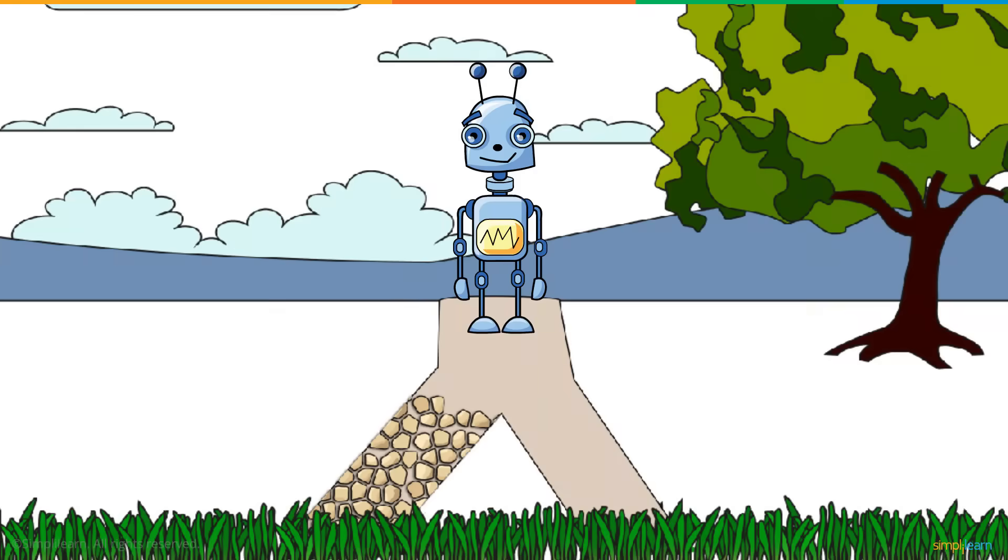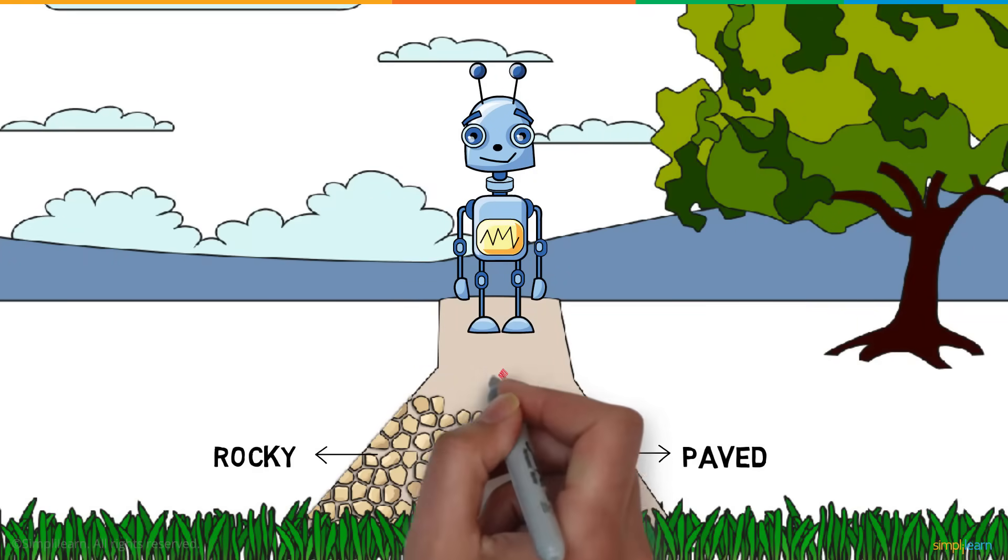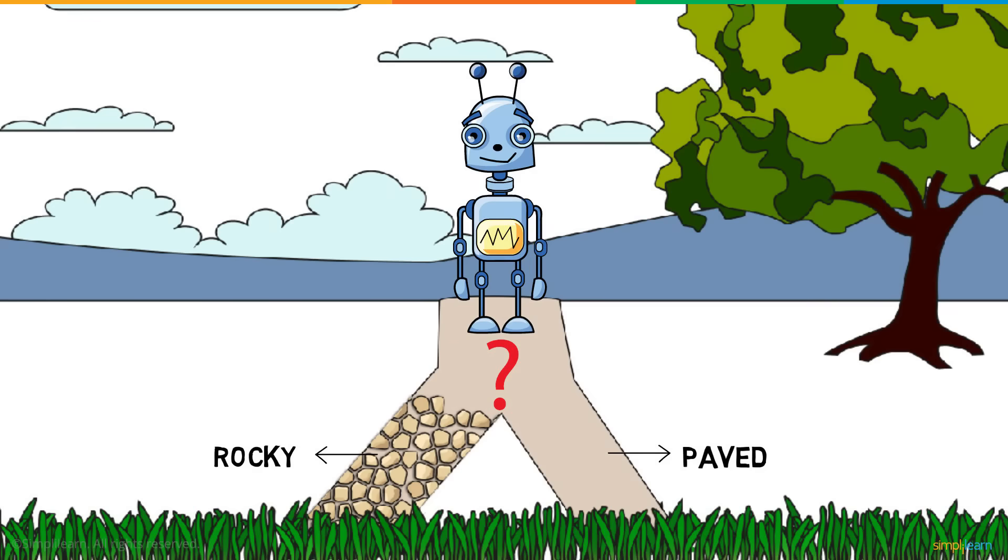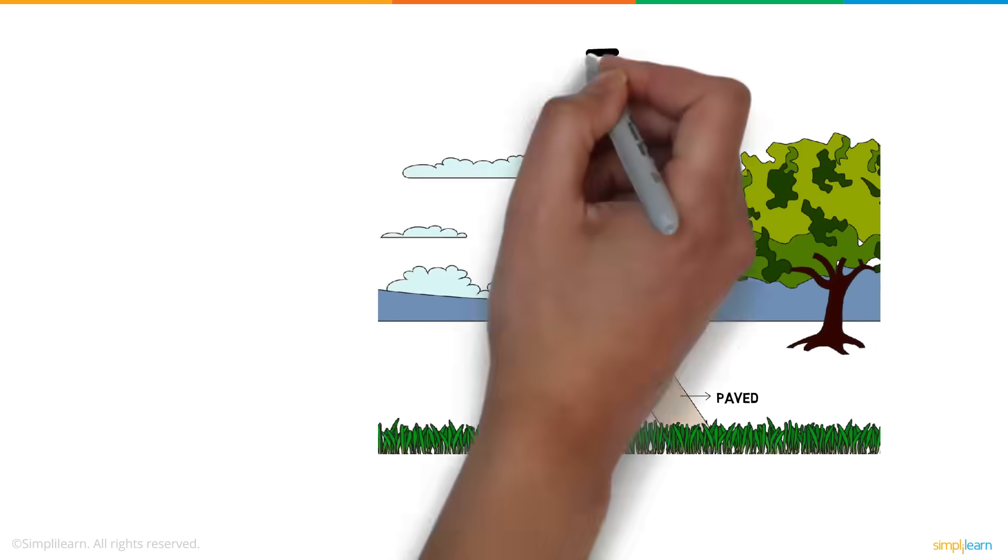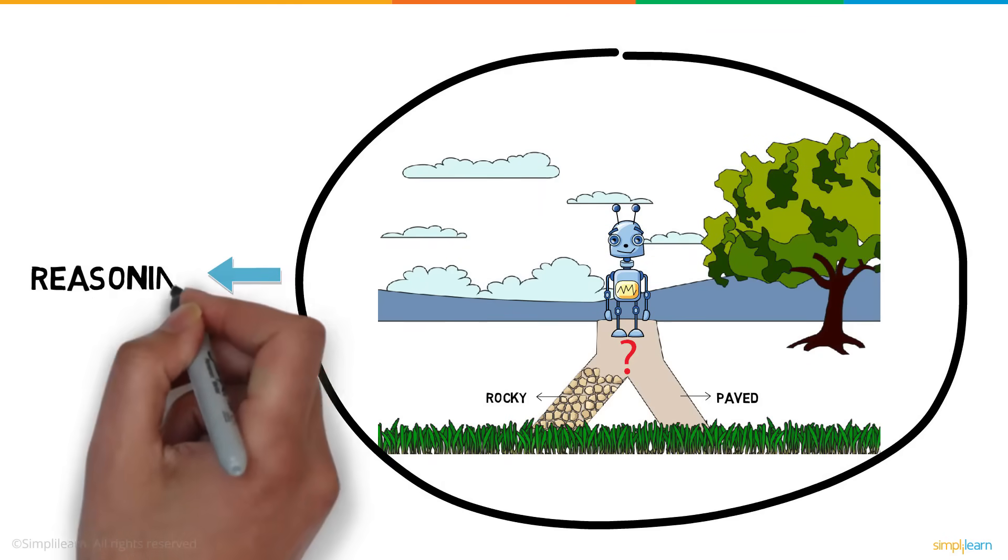The robot is now at a crossroad, one that is paved and the other rocky. The robot must determine which path to take based on the circumstances. This portrays the robot's reasoning ability.